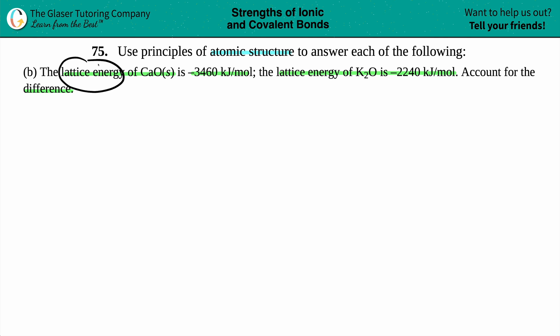Now, the thing with lattice energies is this depends on different textbooks and different definitions as to whether it is a negative or a positive value. Generally speaking, lattice energy should be a positive value, but since there are negative values here, they're doing like the opposite. Lattice energy by definition is the energy that it takes to break apart an ionic compound — the amount of energy you need to pull away the ions, since the ions are attracted to each other.